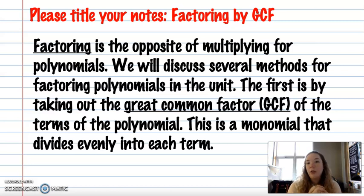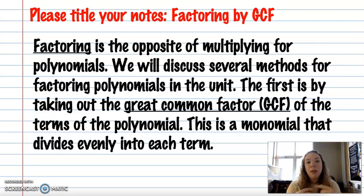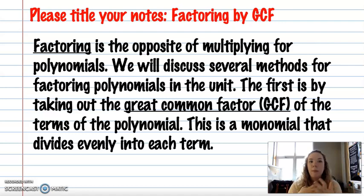The first is by taking out the greatest common factor, which we shorten to GCF, of the terms of the polynomial. This is a monomial that divides evenly into each term. Go ahead and pause if you need to so you can get this first slide written down, and then unpause when you're ready to move on.